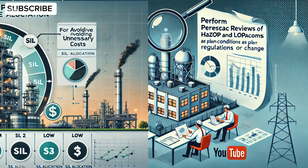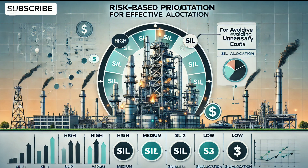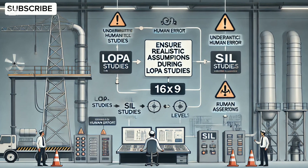Consider risk-based prioritization to allocate SIL levels effectively, avoiding unnecessary costs. A common challenge is underestimating human error in LOPA, leading to flawed SIL assignments. Ensure realistic assumptions during LOPA studies.